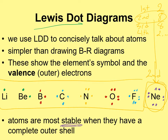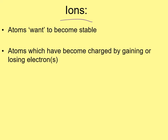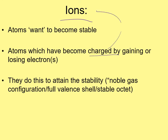Other atoms are not yet stable — they can become stable by getting a full outer shell. Fluorine, for example, is almost like neon but not quite, so it needs to gain one more electron. This is why atoms form ions: atoms want to become stable by gaining or losing electrons to get a full outer shell. When they do that, they become charged, and a charged atom is called an ion. Atoms try to look like the stable noble gases at the end of their period.